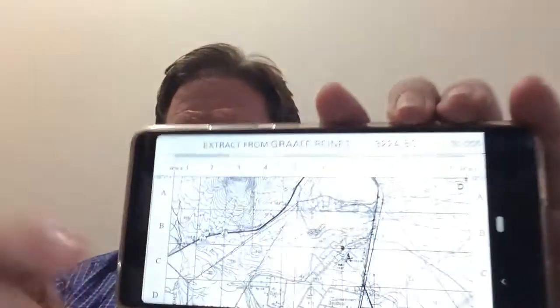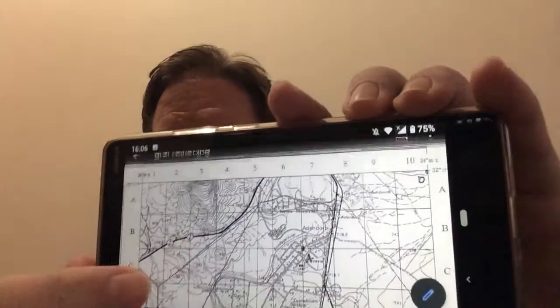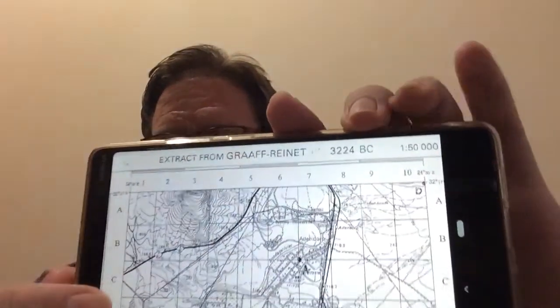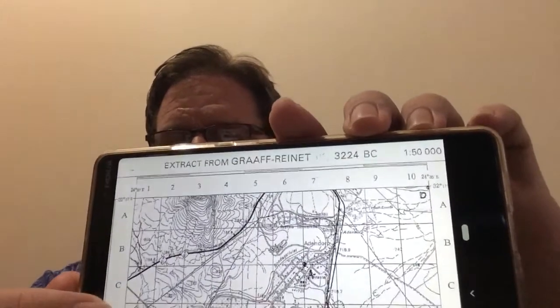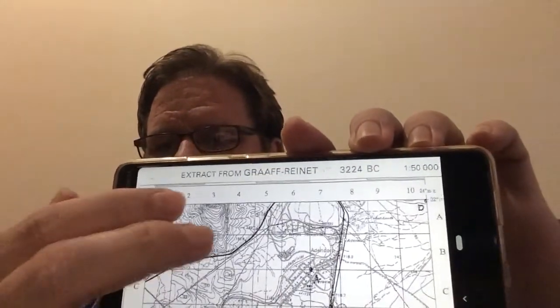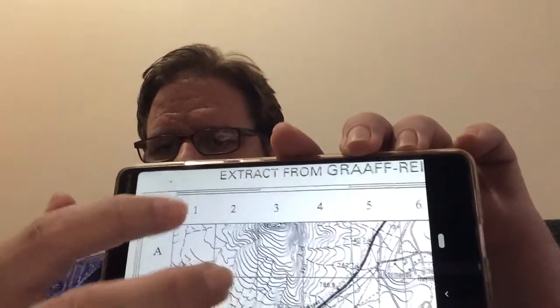If you guys can have a look at the map that I've got here on my phone, this is Graaf-Reinet and it's a 1 to 50,000 scale map. And if we zoom in a bit into this top corner,